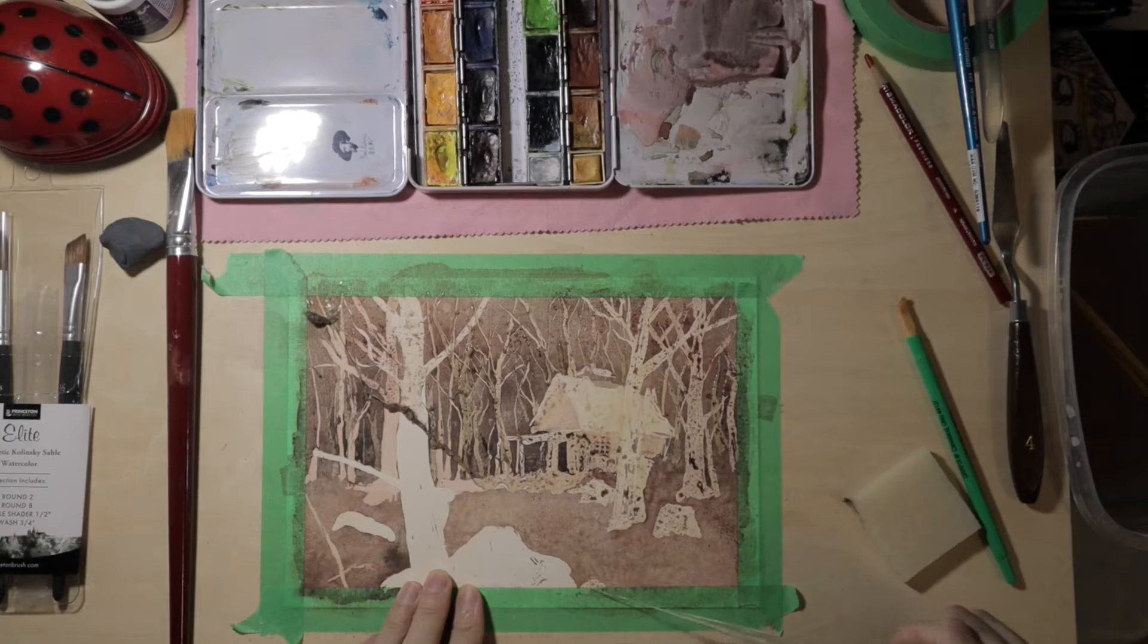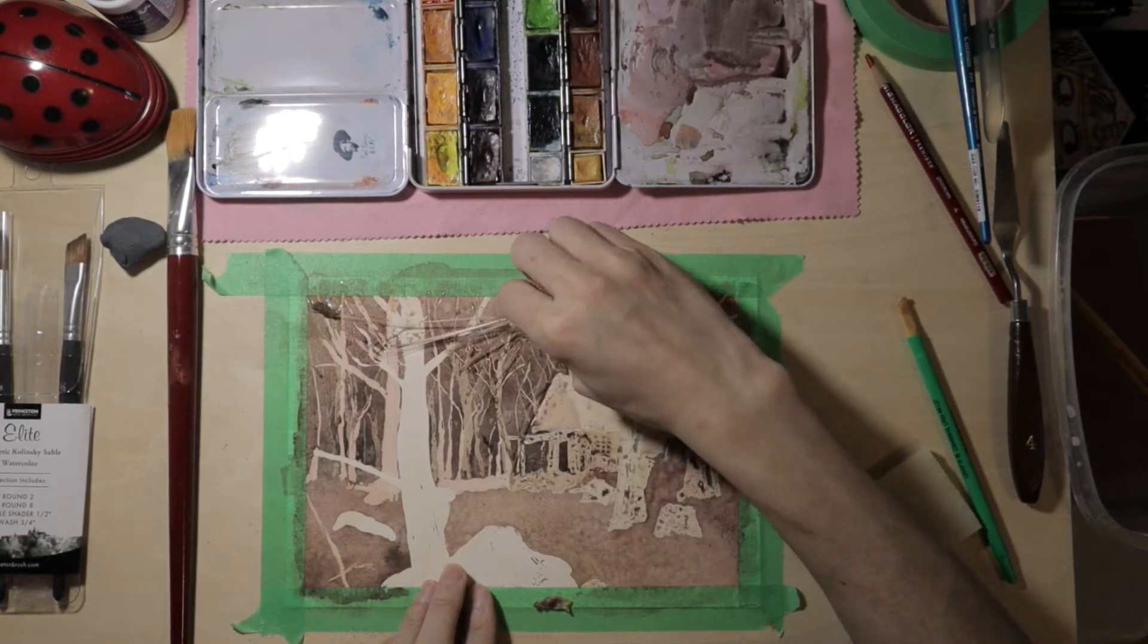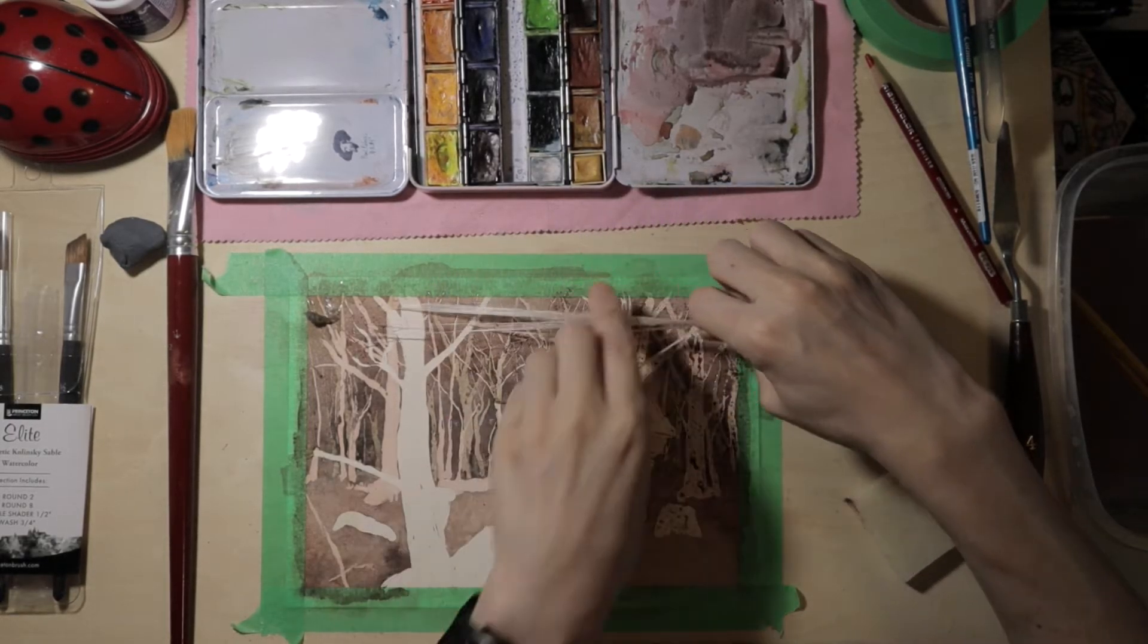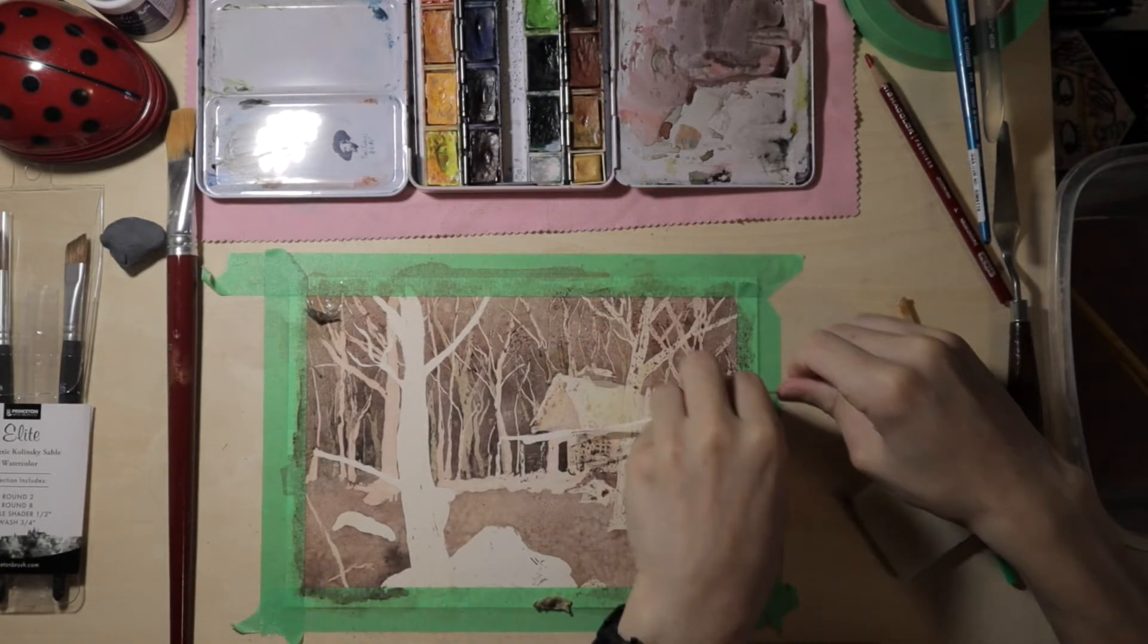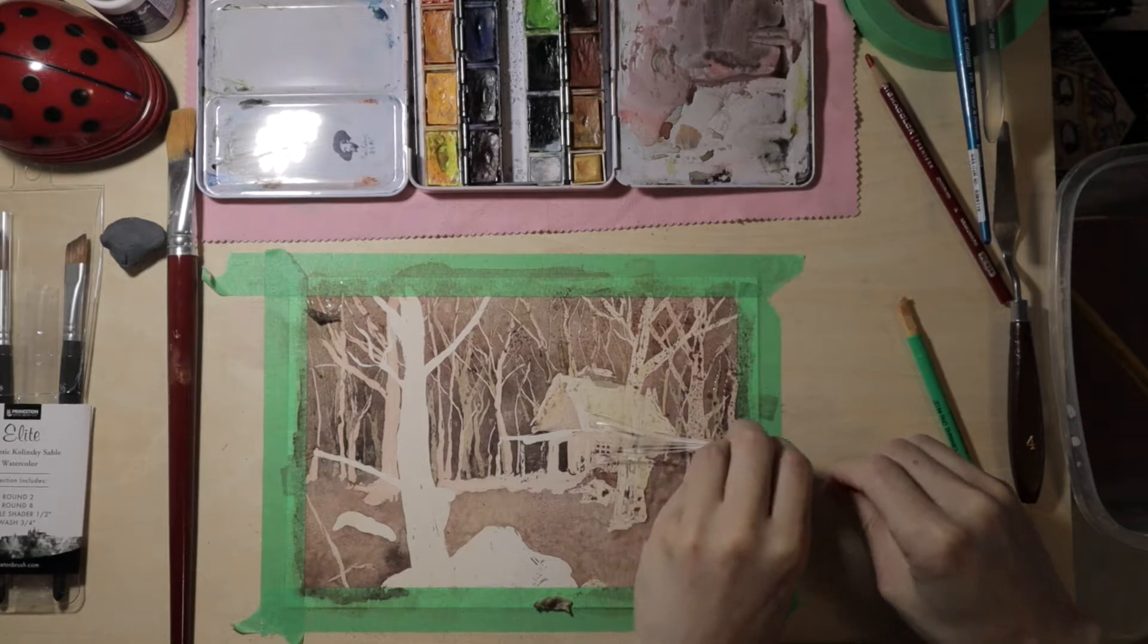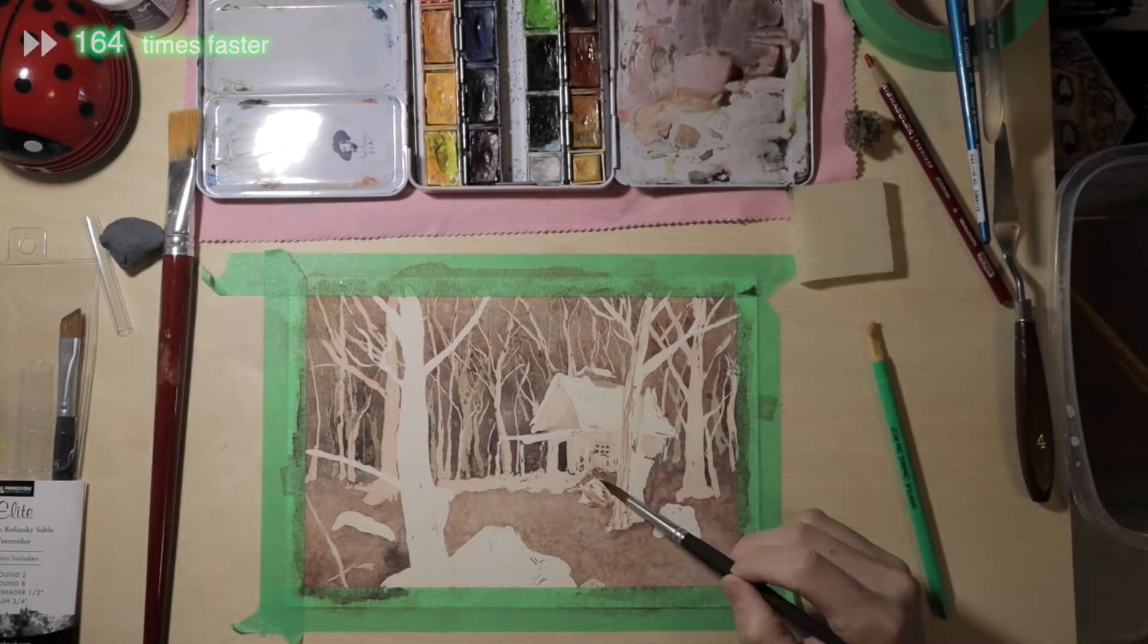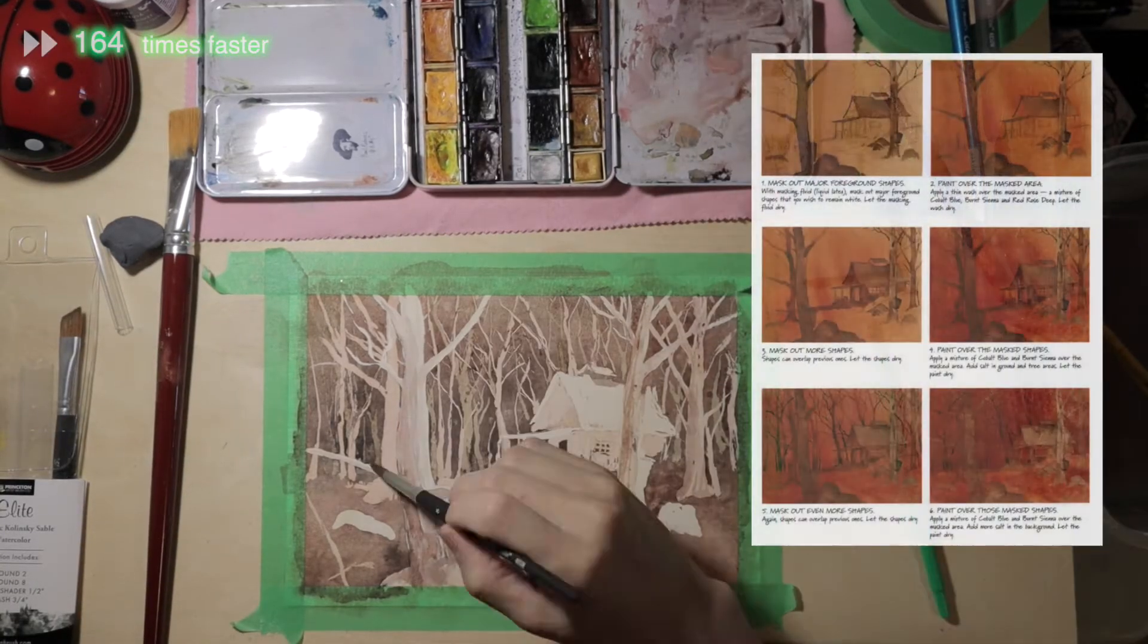What you're seeing right now is one of the first watercolor paintings I did in a long time. Here I was using masking technique to paint a scene of a cabin in the woods. This painting is not related to the water and oil project of this video, it's just me warming up again with watercolor. I followed the tutorial from a book.